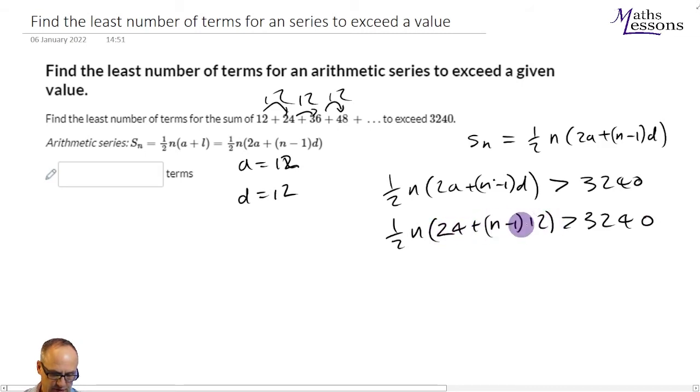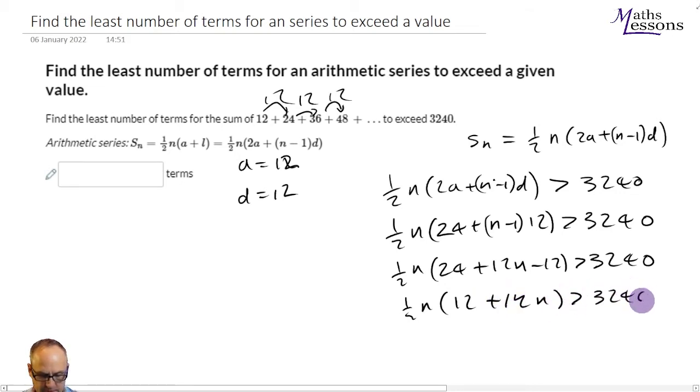Let's do a bit of simplification. Let's just multiply this little bracket out in here. So we've got a half n times 24 plus n times 12 is 12n, minus 1 times 12 is minus 12 and that's greater than 3,240. Now we got 24 minus 12, so that gives me 12 plus 12n is greater than this. And what we can see here is we can times this out by a half n. So half n times 12 is going to give me 6n, and a half n times 12n is going to give me 6n squared.